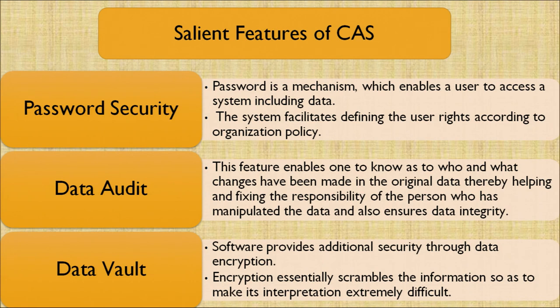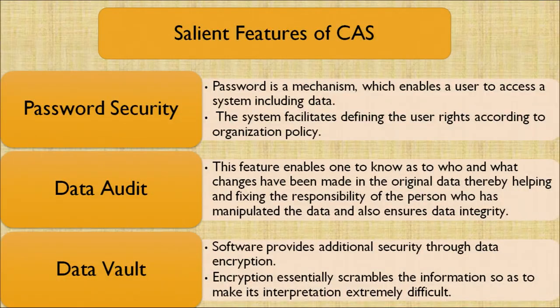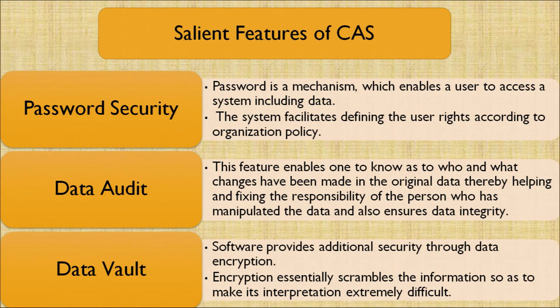What are the salient features of a computer-aided system? Number one, password security; second, data audit; third, data vault. Password security is a mechanism which enables a user to access a system including its data. The system facilitates defining user rights according to the organization policy, so password security protects our data from third-party users. Data audit enables us to know who has made changes and what changes have been made in the original data, thereby fixing the responsibility of the person who manipulated the data and ensuring data integrity. A data log is maintained, and if changes happen in the data log, we can identify who made the violation. Last, data vault: software provides additional security through data encryption, which essentially scrambles the information to make interpretation extremely difficult.